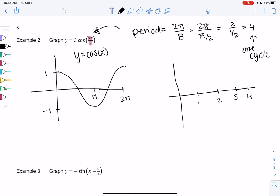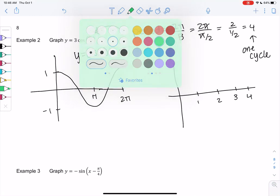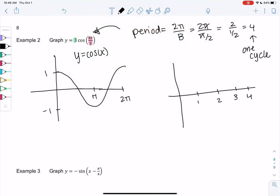And then we have a stretch of 3. A vertical stretch. It changes the amplitude to 3. And so it looks like the same graph. Pretend that's a little smoother. Same graph.